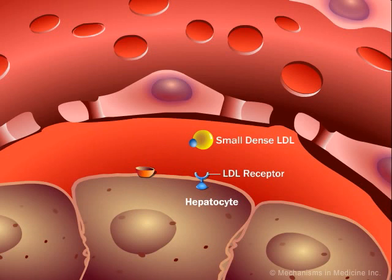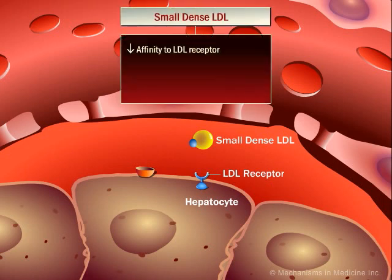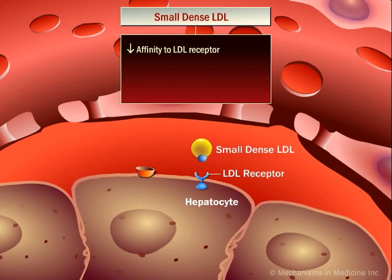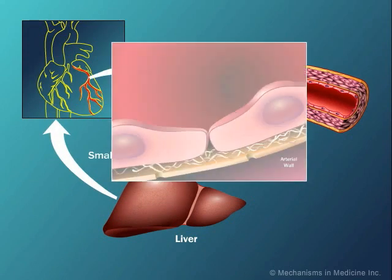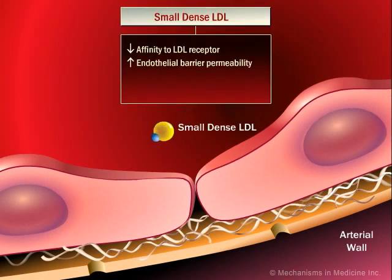There are several key roles that small-dense LDL molecules play in the progression of cardiovascular disease. The first feature is that these modified particles have a lower affinity for normal clearance by LDL receptor sites on the surface of hepatocytes. As a result, normal binding does not occur, and instead the small-dense LDL particles bind poorly to the LDL receptor. From the liver, these small-dense LDL particles enter the circulation and travel to the coronary artery.